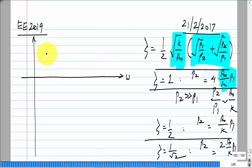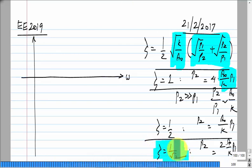The significance of ζ = 1/√2 is worth noting. ζ = 1 is the fastest response without overshooting — that's critically damped. But ζ = 1/√2 also has some significance. It has to do with the frequency domain response.